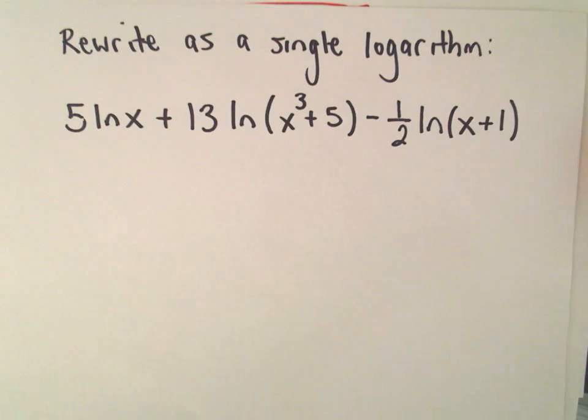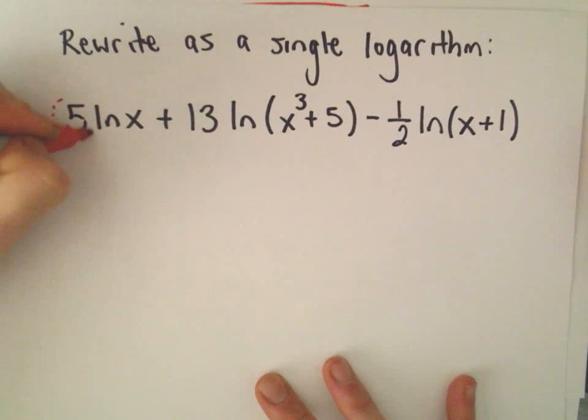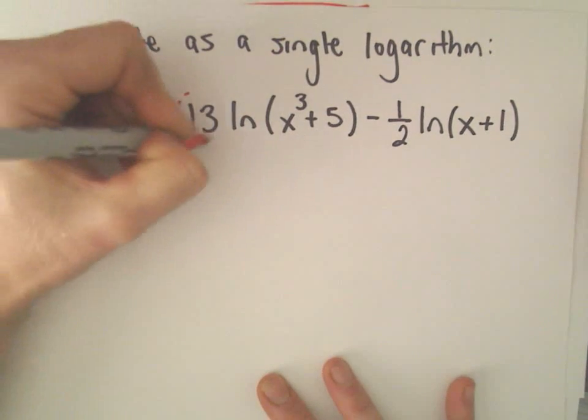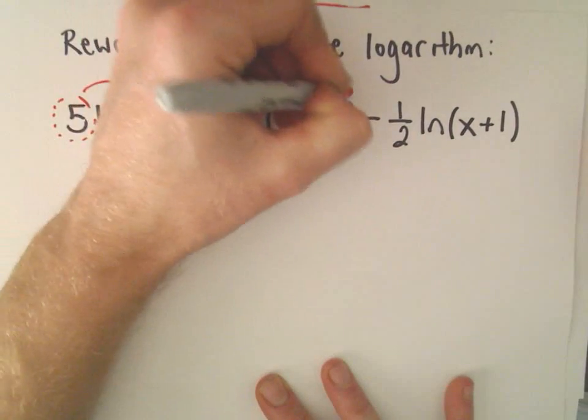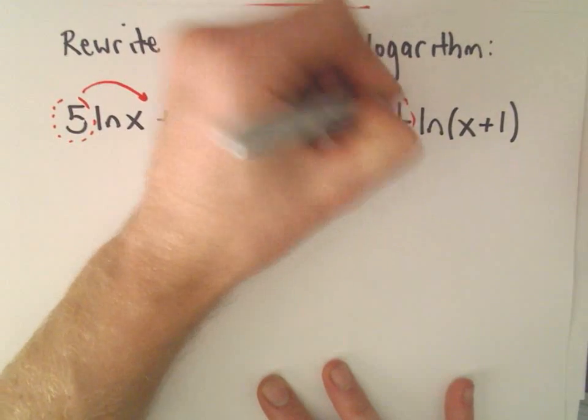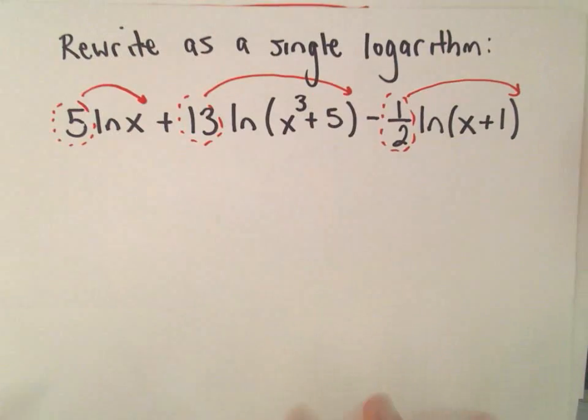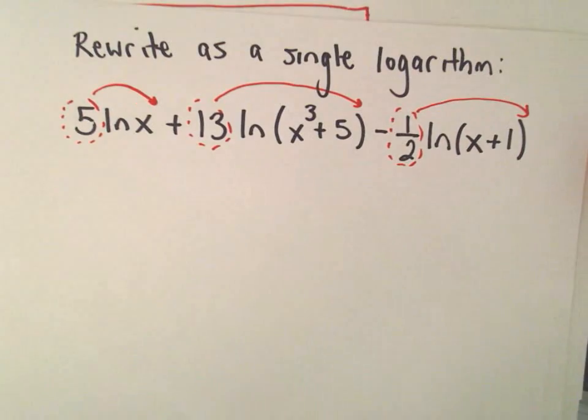So the first thing I'm going to do again is just kind of go backwards. I'm going to pull all of the coefficients. I'm going to write those as exponents. Positives and the negatives, I'm just going to leave those out front. So I'm just going to take the coefficient, not worrying about the sign.